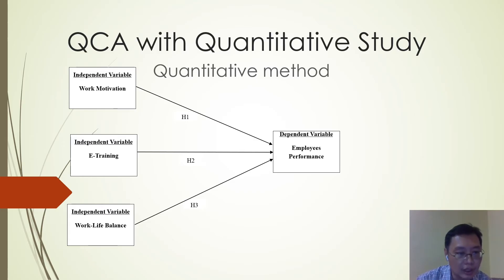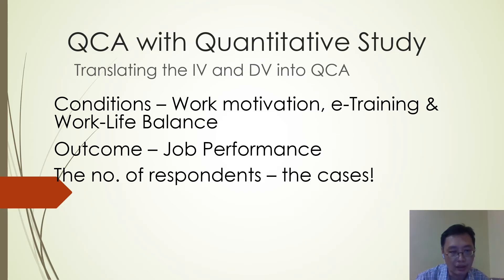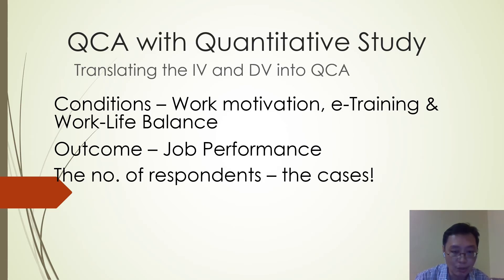Let's say this is a study of work motivation, e-training, and work-life balance on employees' performance. You can do a regression analysis, but in QCA you have three conditions and an outcome. The conditions will be work motivation, e-training, and work-life balance, and the outcome is job performance. The number of respondents, as some of you may be familiar with, will be the number of cases. There is no minimum number of cases needed for QCA — that is actually the strength of QCA, which is different from statistical analysis tools. According to QCA literature, there should be at least three and a maximum of eight conditions.